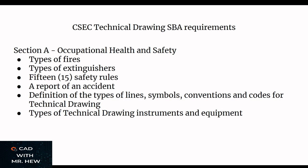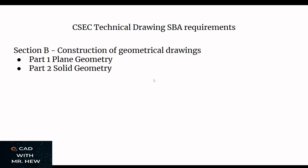Having completed the conventions, the candidate will look at the different codes used in technical drawing. To close off Section A, the candidate will discuss the different types of technical drawing instruments and equipment, showing diagrams to illustrate each instrument — explaining what they are and providing a diagram for each.